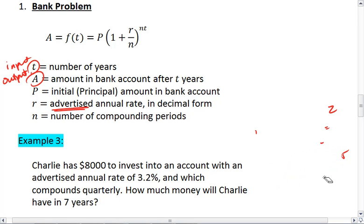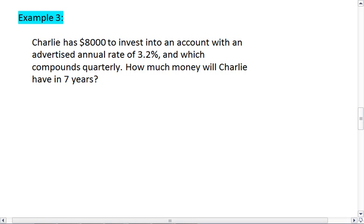Here's our first question. We have Charlie. Charlie has $8,000 to invest into an account. Right away you see account. An advertised annual rate. You are dealing with a bank problem. You have A equals P times 1 plus R over N to the NT.